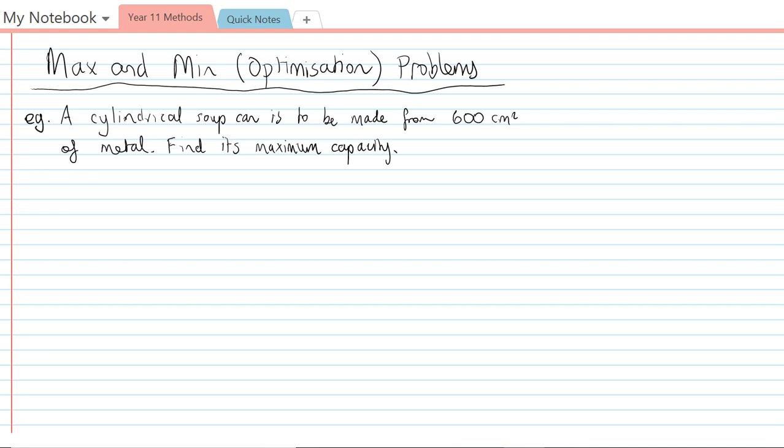Alright, so the third example. A cylindrical soup can is to be made from 600 square centimeters of metal. Find its maximum capacity.